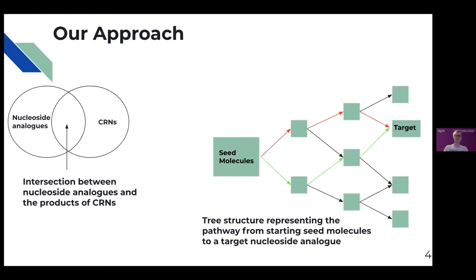So we built upon the work of that 2020 Cleves team by investigating the intersection between the two aforementioned datasets: the library of nucleoside analogues and the products of those CRNs produced by the 2020 Cleves team simulating prebiotic Earth chemistry. We then identified synthetic pathways that could be traced back from identified matched nucleoside analogues from the seed molecules of a network, tracing back through the network using the RELs or relationship files associated with each network encoding all the reactions that occur between molecules of the network.